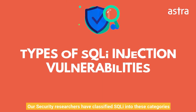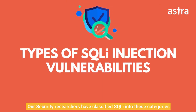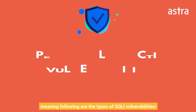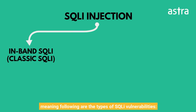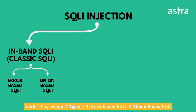Our security researchers have classified SQL injection into these categories. The first is in-band SQL injection, which is the classic SQL injection vulnerability. Under this, we have two types: error-based SQL injection and union-based SQL injection.